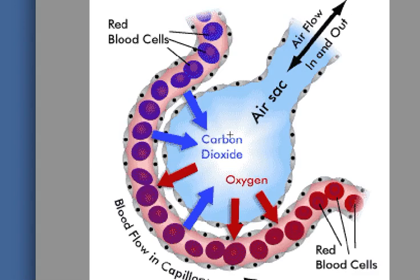The ribcage moves down, squeezing on the outside of the alveoli all around the lungs, forcing the air out and getting rid of a lot of carbon dioxide. When we breathe in, all of this stretches, lots of air rushes in, and 20% oxygen goes into the blood. When we breathe out, we've absorbed 4% of that oxygen, and we've removed 4% carbon dioxide from the plasma. The carbon dioxide goes out when we breathe out, and we also breathe out some of the oxygen.